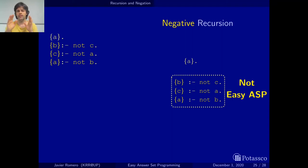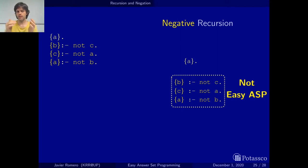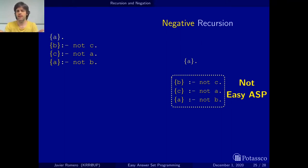And this is also a valid move because of the second reason: negative recursion is not needed. What I mean by 'not needed' is that if we have a problem and we represent it with a program with negative recursion, there is always a way to represent it without negative recursion in Clingo. So maybe this is a bit complicated to understand because I have not explained how negative recursion works in Clingo, but it works in some way.